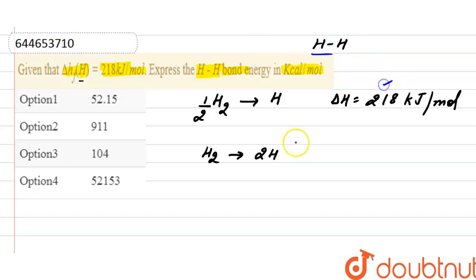That is 436 kilojoule per mole, and this is also the bond energy of H2. We have to find out the bond energy in kilocalorie per mole.